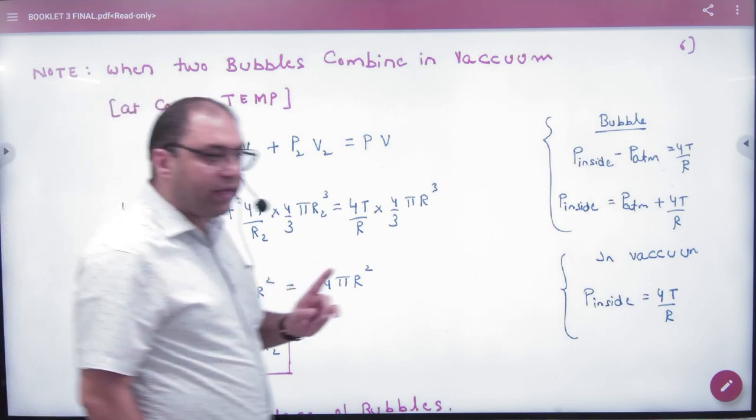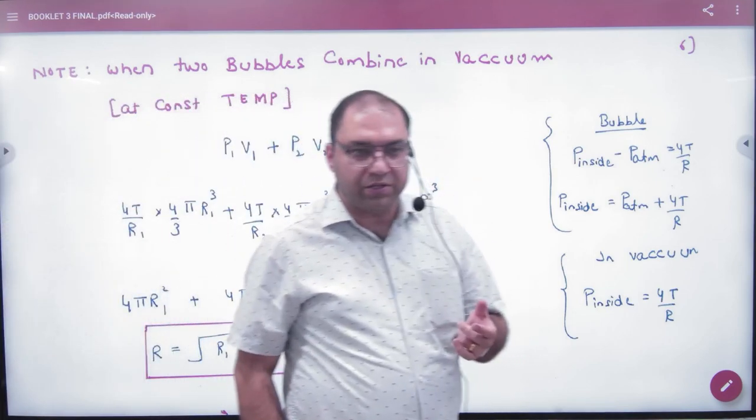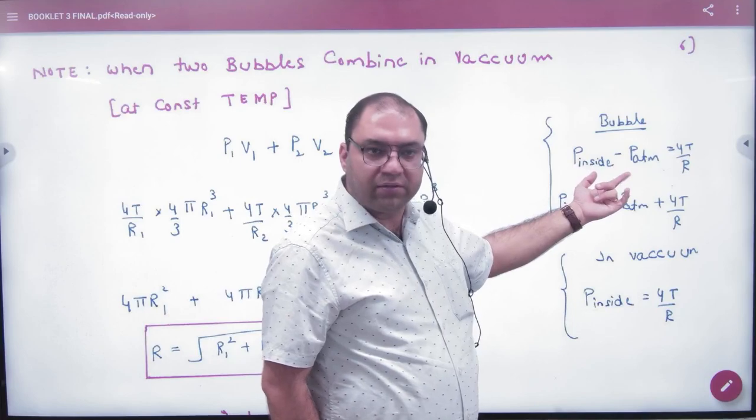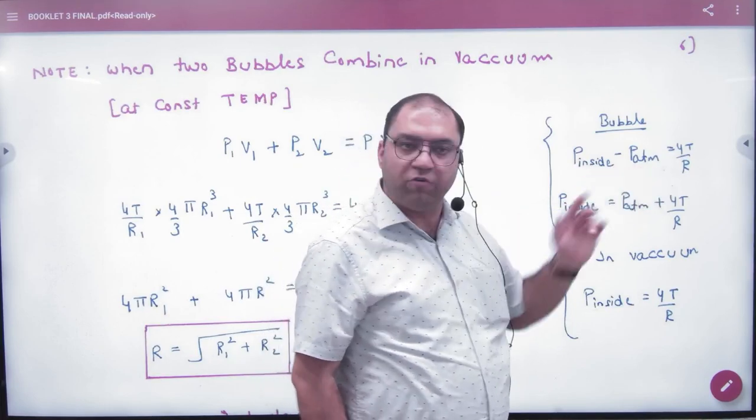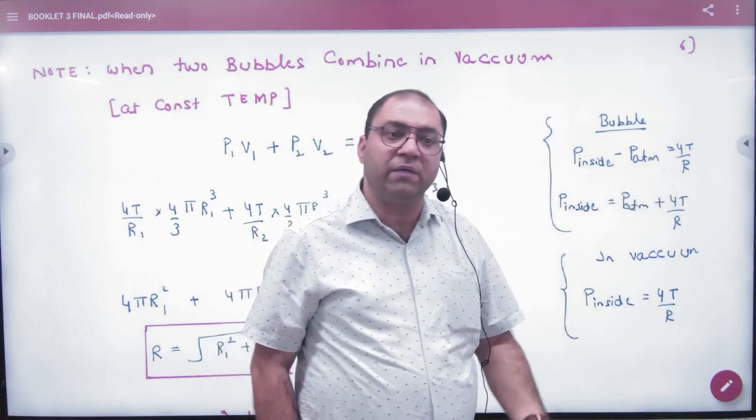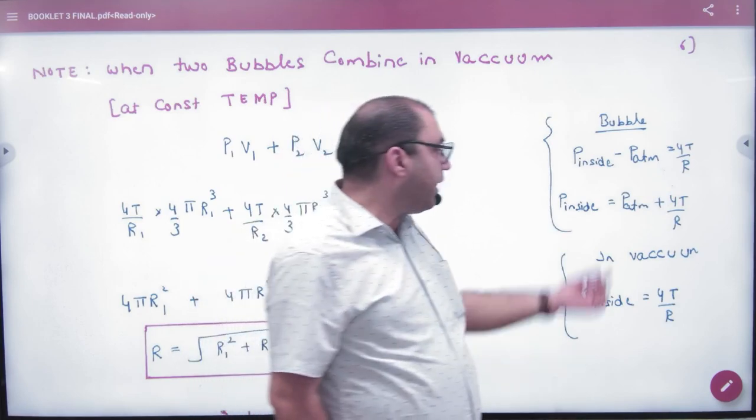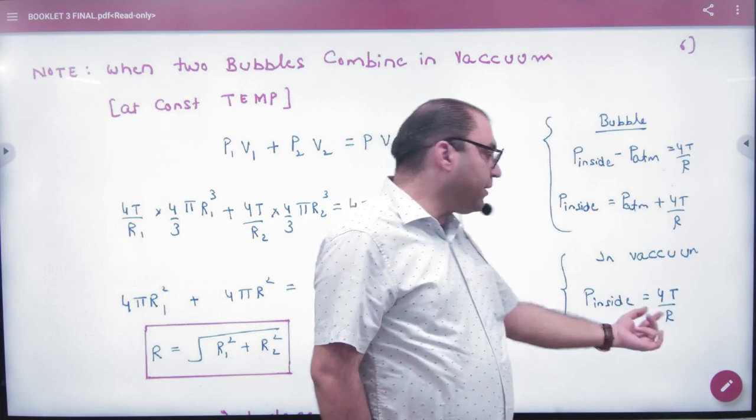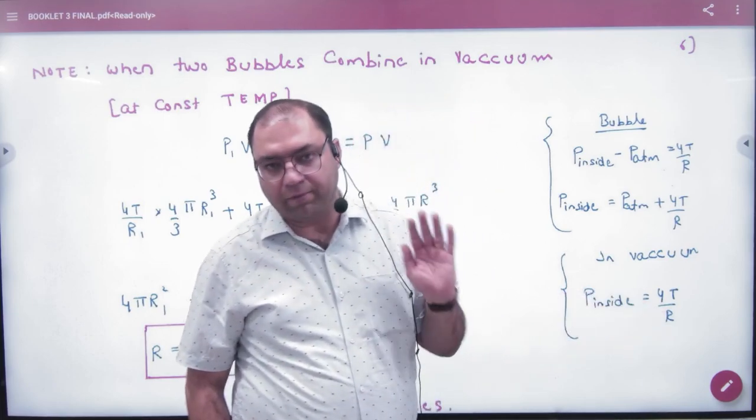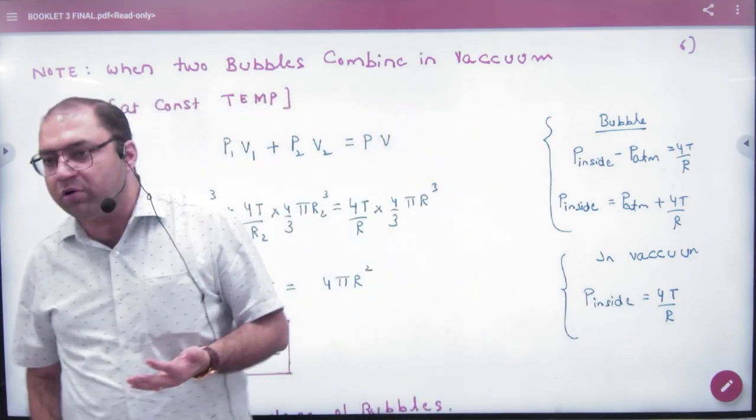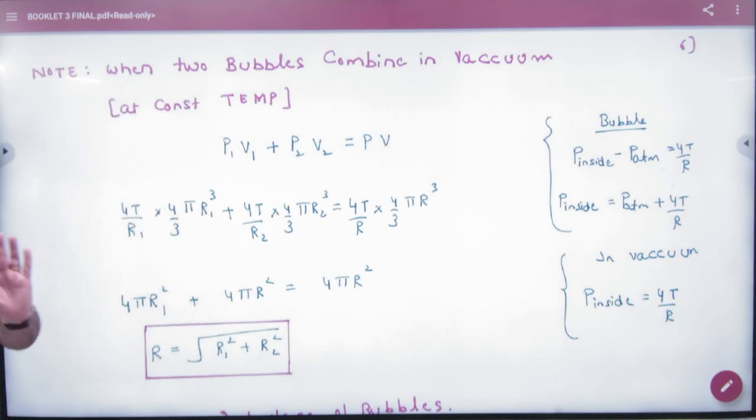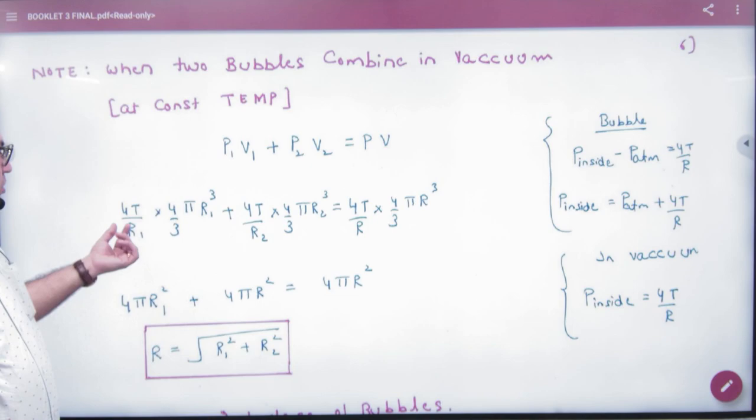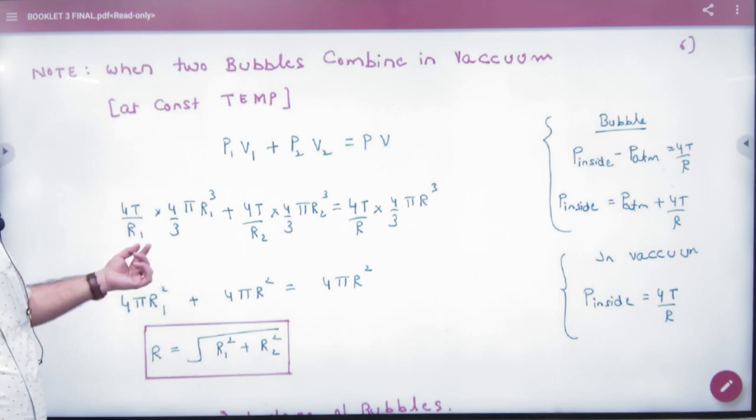Vacuum means the excess pressure inside the bubble. What is P inside the atmosphere? It was 4T by R. If the bubble is in vacuum, what is the atmospheric pressure? It is 0. So what is the pressure inside?